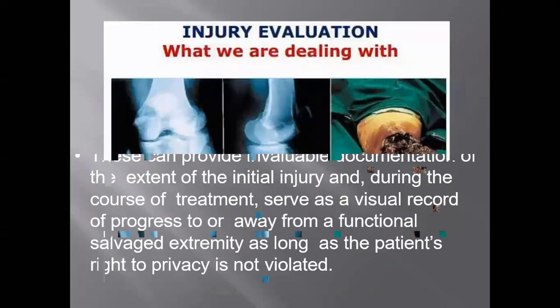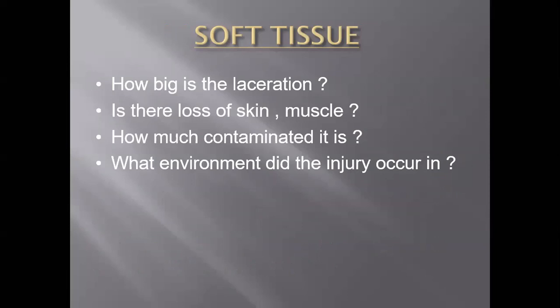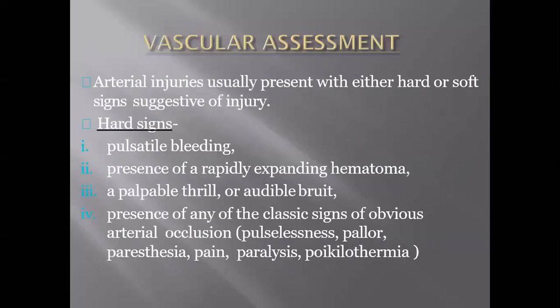After stabilizing the patient, we have to examine the injured limb. First, we have to examine the soft tissue — look for the size of the laceration, assess for skin loss and muscle loss, and whether the wound is contaminated. We have to clearly examine and document the findings. Then we have to assess for vascular injury and look for hard and soft signs. Hard signs are obviously associated with vascular injury: pulsatile bleeding, rapidly expanding hematoma, palpable thrill, and audible bruit.